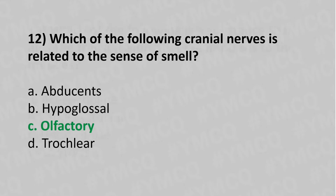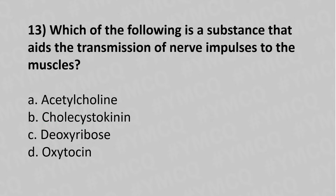Now let's move to question number thirteen: Which of the following is the substance that aids the transmission of nerve impulses to the muscle? Option A: acetylcholine. Option B: cholecystokinin. Option C: deoxyribose. Option D: oxytocin. The answer is Option A: acetylcholine.